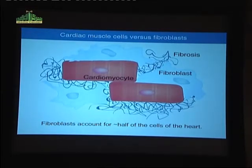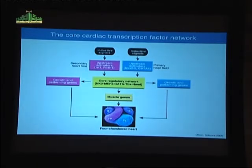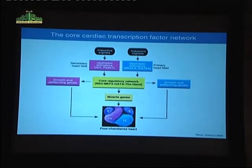We've wondered whether we might be able to divert these scar-forming fibroblasts into the formation of new heart muscle cells. Over the past 15 years or so, our group and others have deciphered the core components of a gene regulatory network that drive the formation of the heart in organisms ranging from fruit flies to mammals. At the center of this network of cardiogenic genes are five or so transcription factors, and we know from mutations and gain-of-function experiments that they're sufficient — and in many cases necessary — to drive the cardiac program.